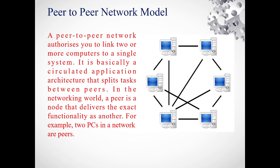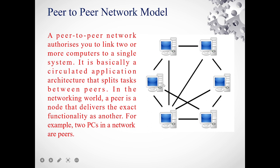The important point in peer-to-peer network is that all connected computers must have the same type of configuration. All computers in your network should have the same configuration — for example, Windows XP on each computer. So if you have 10 computers, all must run the same OS. This is one limitation of the peer-to-peer network model.